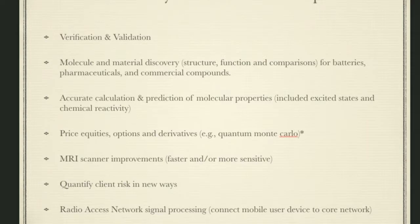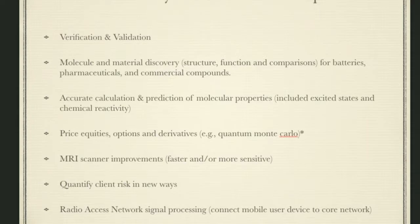We've seen companies try to price equities, financial options or derivatives, including the use of quantum Monte Carlo. MRIs — magnetic resonance scanners — can be improved using quantum: we can either make them faster or more sensitive. We can quantify client risk in new ways. And finally, we can help with 5G radio access network signal processing — we can either connect better to cell phone towers or improve the connection back to the core network.